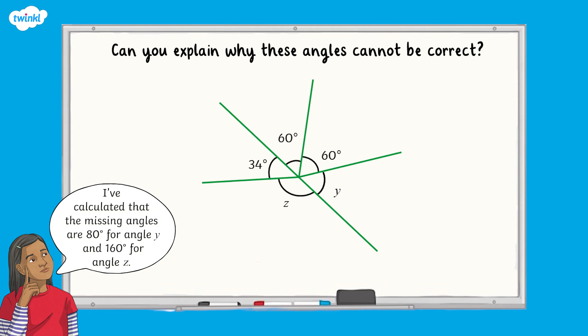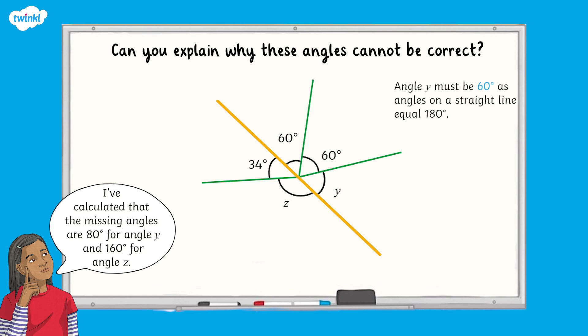Now let's see if we can apply our knowledge of angles on a straight line and angles around a point to calculate the following missing angles. Emily has been calculating the two missing angles in this diagram. She says that the missing angles Y and Z are 80 degrees for angle Y and 160 degrees for angle Z. Can you explain why these angles can't be correct? Angle Y can't be 80 degrees as angles on a straight line total to 180 degrees. 60 degrees add 60 degrees is equal to 120 degrees, therefore the remaining angle must equal 60 degrees to total 180 degrees. Angle Z can't be equal to 160 degrees, as angles on a straight line total 180 degrees. 160 degrees add 34 degrees is equal to 194 degrees, which can't be correct. Angle Z equals 146 degrees.